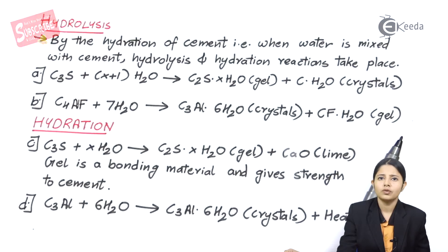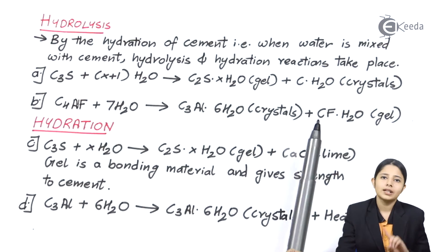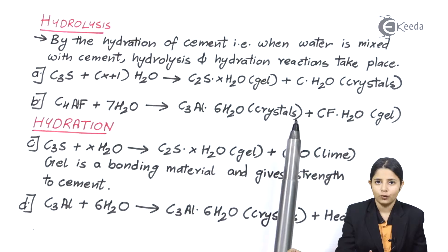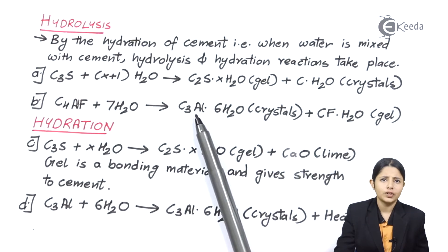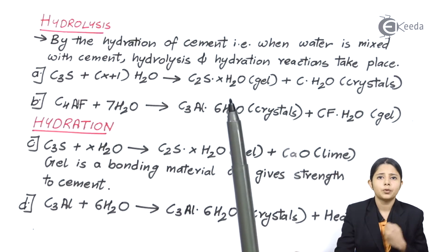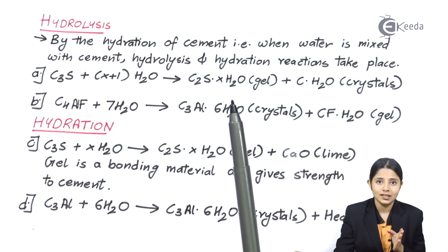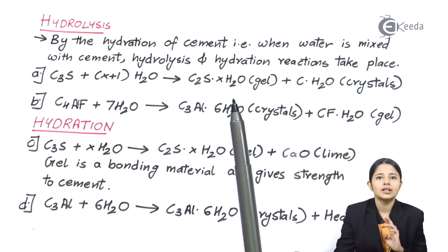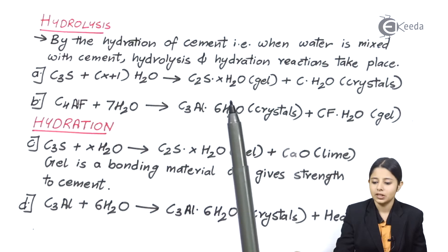In the second reaction also, we got two products: one in crystal form and another in gel form. For any cement paste, it is very important to get products in crystal as well as gel form so they perform both setting and hardening properties of cement.